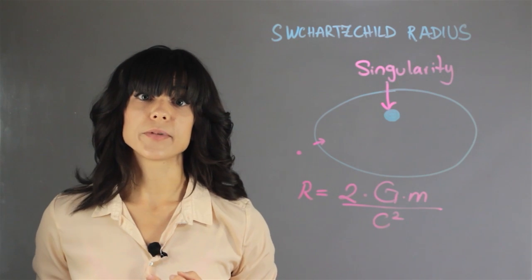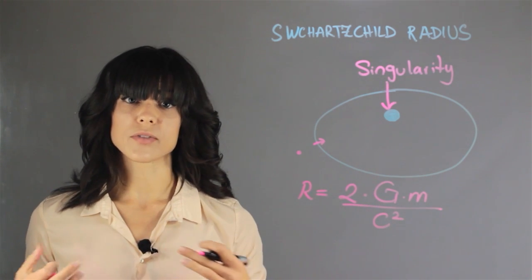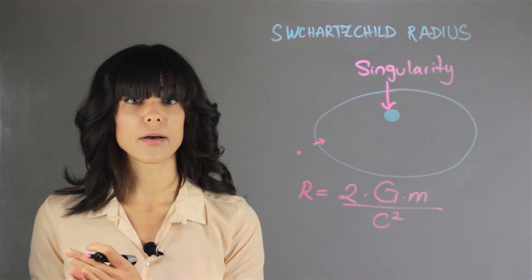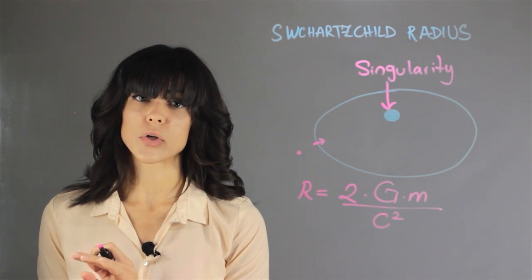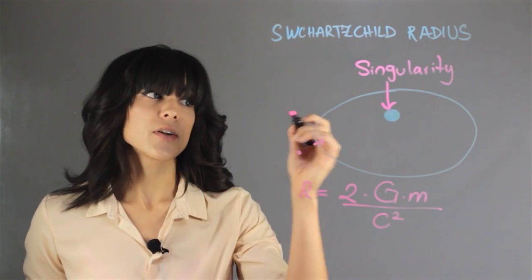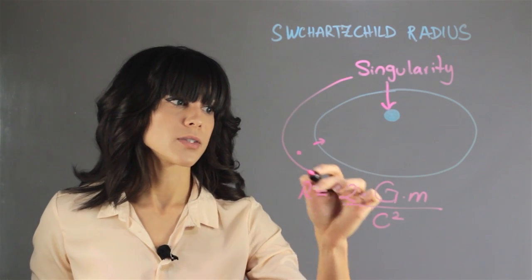Now, for different objects, the radius of escape where you can escape varies. And this is generally called the event horizon. The event horizon is another type of radius.